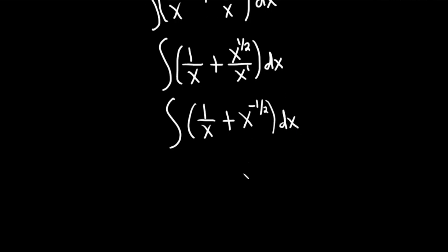Now we can go ahead and integrate. We drop the integral sign. 1 over x becomes the natural log of the absolute value of x.